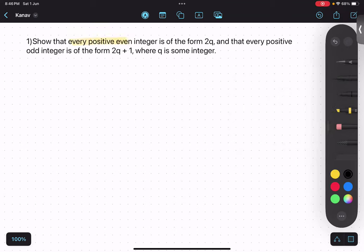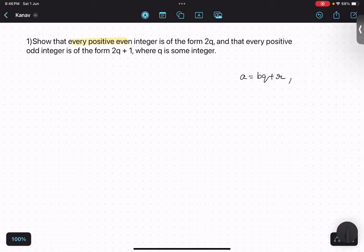Remember we are going to use Euclid division lemma, so Euclid division lemma is a equals to bq plus r. I call it Bekar, that's how I remember. That's the mnemonic which I use, Bekar formula.